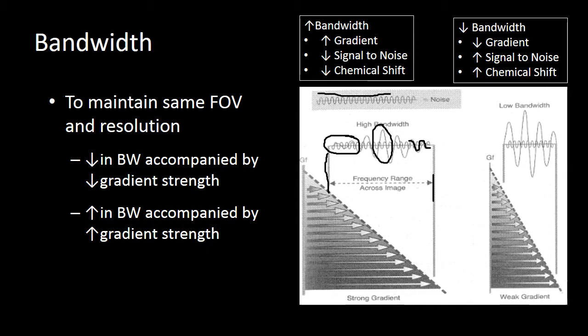If we reduce our bandwidth, we have a weak gradient and our RF signal is going to have higher amplitude. And since our noise is sort of a fixed amplitude, the impact that our noise has on our image is going to be decreased. So we have a better signal to noise at a low bandwidth. We have worse signal to noise at a high bandwidth.